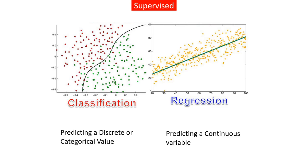There are two types of supervised learning: classification and regression. In classification, you are predicting a discrete or categorical value — the number of possible values in the target column is limited. For example, predicting whether someone passes or fails an exam is just two values. In regression, you are predicting a continuous value, such as the actual score a person will get in the exam, which can range from 0 to 100 and take values like 0.5, 1.5, or 90.5.